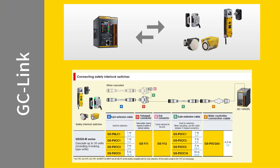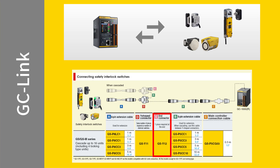The most important thing to remember is that we need one Y connector — part number GSY11 — per interlock that we plan to connect via GCLink. The second most important thing is to always have one end cap, part number GSY12, installed on the last Y connector in that chain of interlocks.